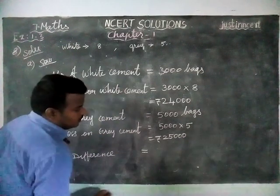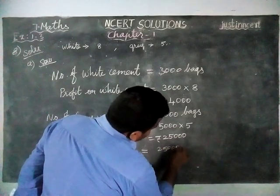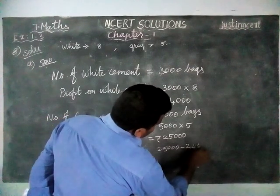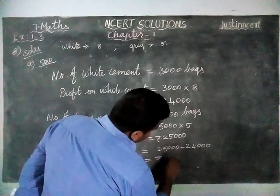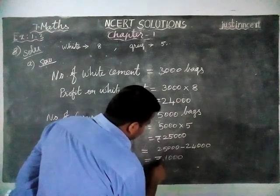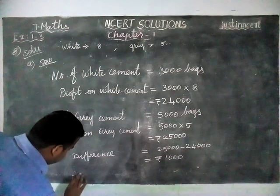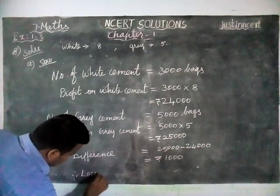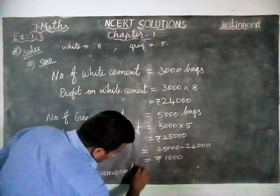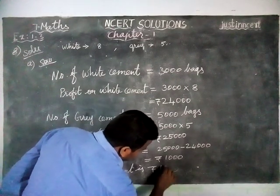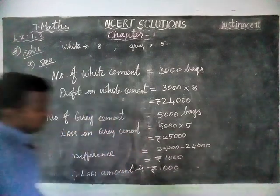Now the difference: 25,000 minus 24,000 is equal to 1000 rupees. That is a loss. Therefore, the net loss amount is 1000 rupees.